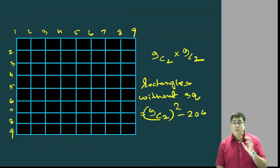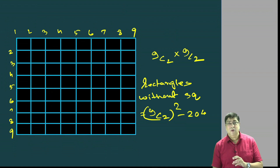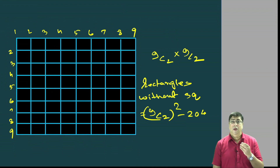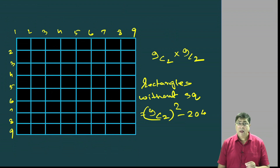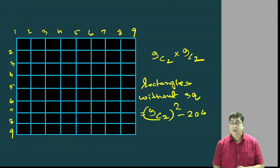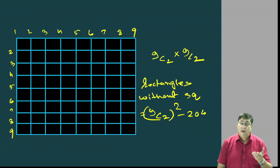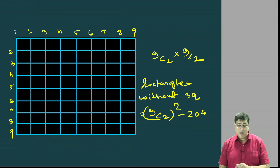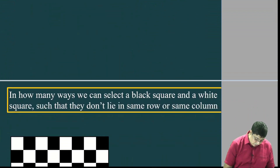That's the most basic part — how many rectangles are there: 9C2 into 9C2. And without squares: 9C2 squared minus 204. Let's go to the next question.